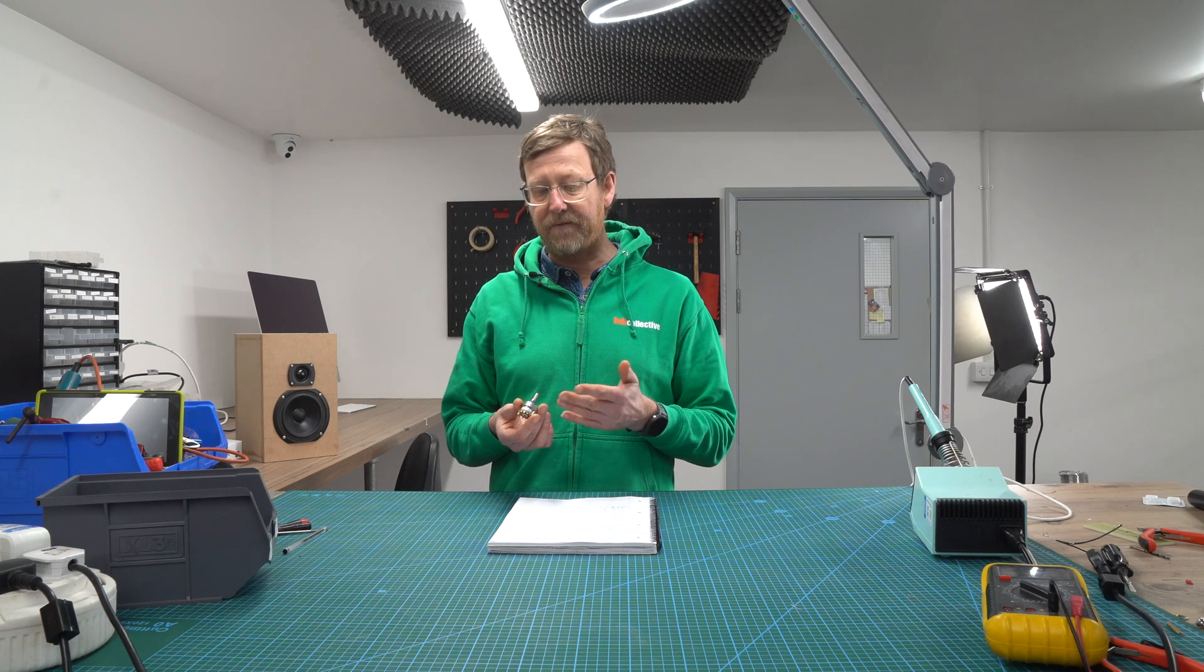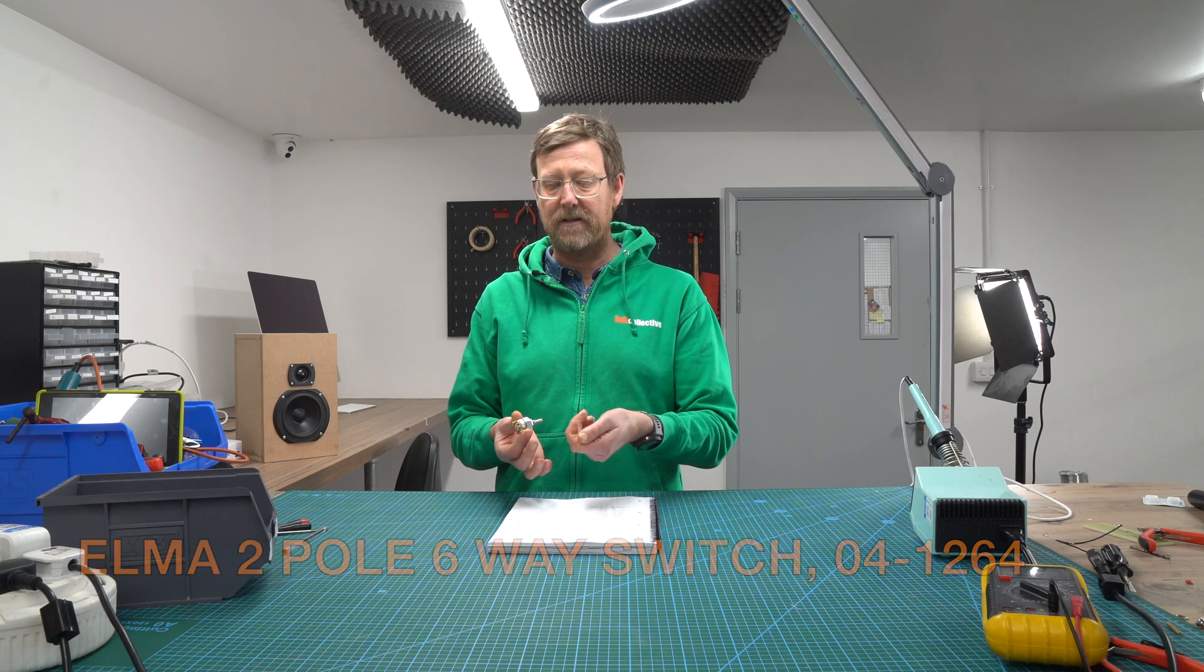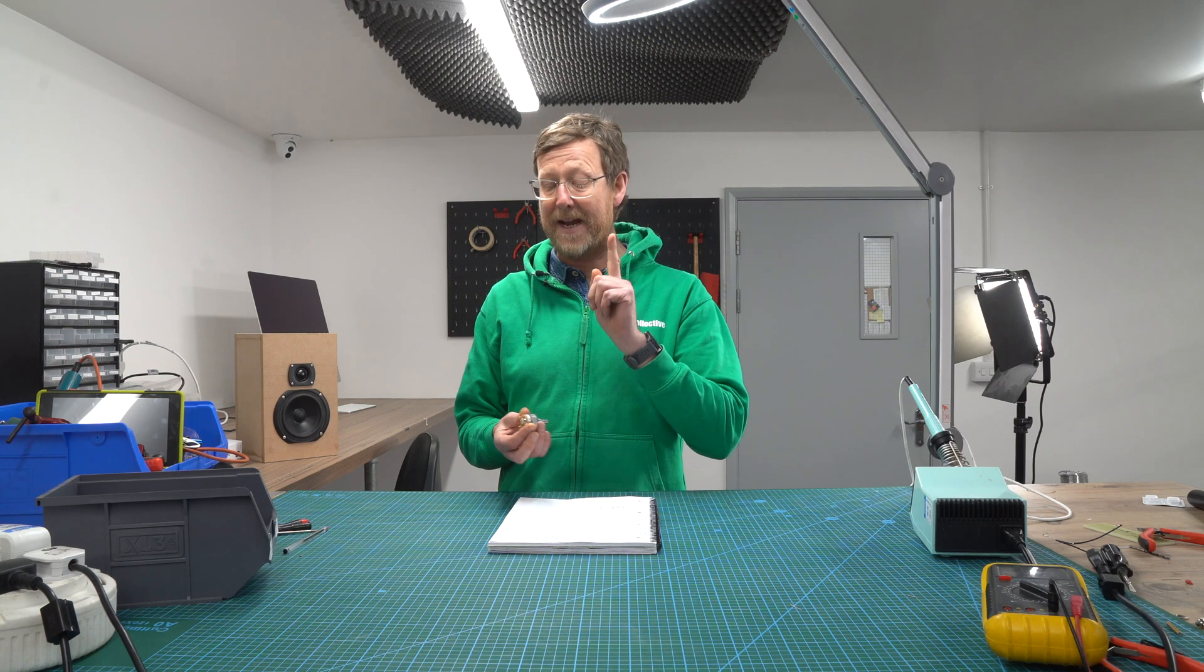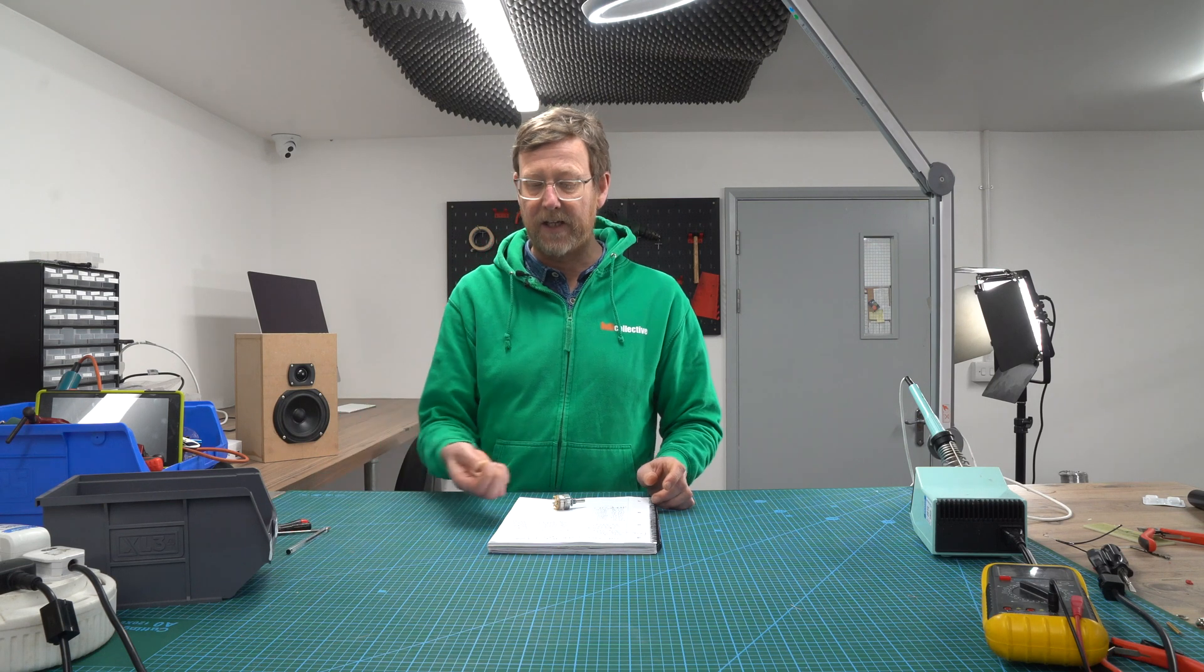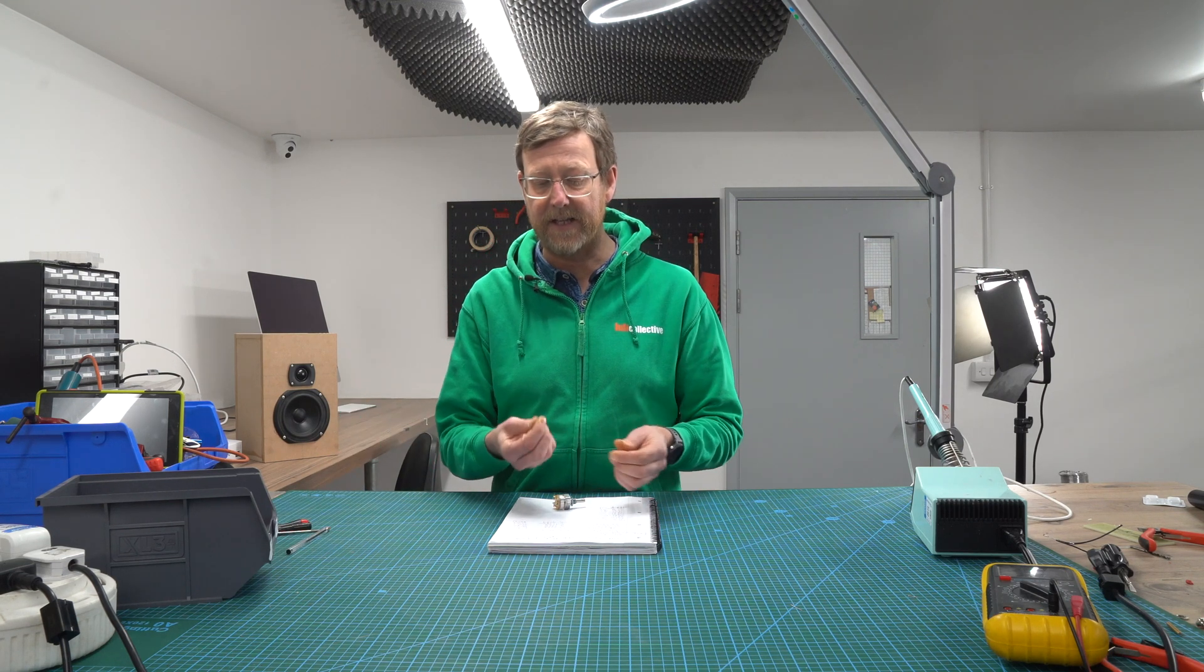So currently this is a two pole six way and it has six positions to it, but what if you wanted to make it a two pole four way? This is where you use a stop pin like this.